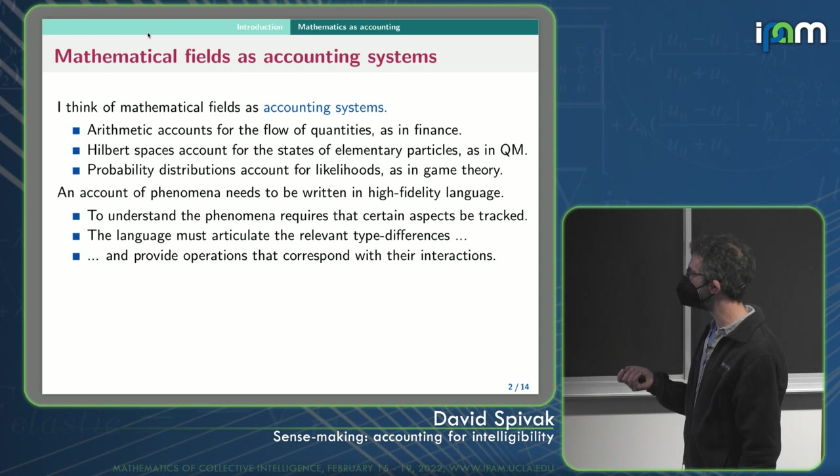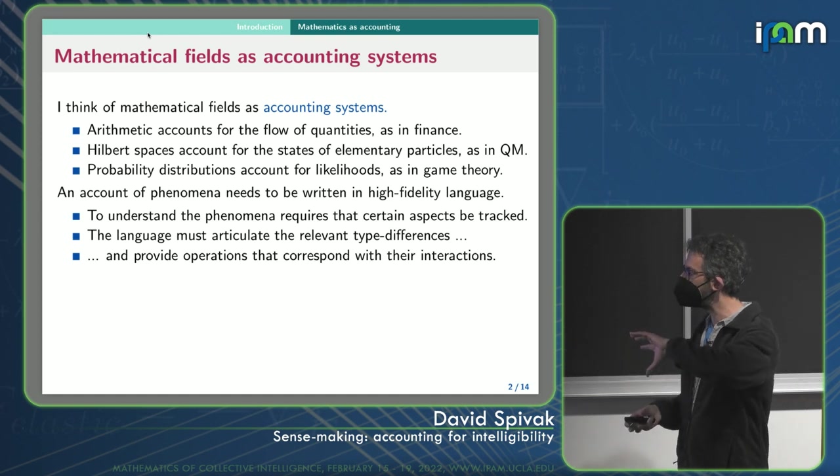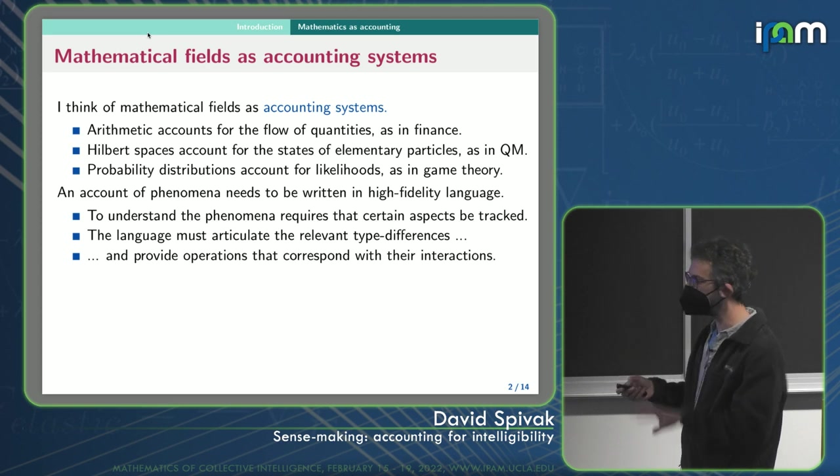But then I want operations. I can multiply a number by a shape and scale it or multiply an angle by a shape and rotate it. So I want to be able to provide operations that correspond to the interactions I want to do with those accounted for variables.